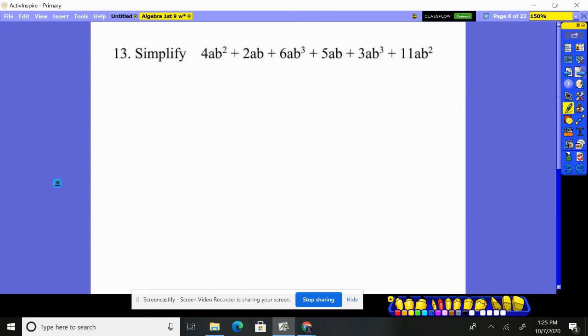Only put together things that are the same. So I have a 4ab squared. I can only put those together with other ab squares. Have you seen any other ab squares? Yep, I see one right here. That's it. 4 plus 11 is 15ab squares.